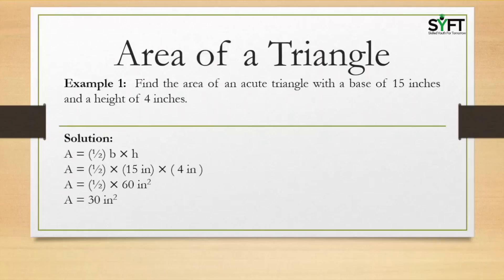Example 1: Find the area of an acute triangle with a base of 15 inches and a height of 4 inches. An acute triangle is one where all angles are less than 90 degrees. We can draw any such triangle — each angle is less than 90 degrees.